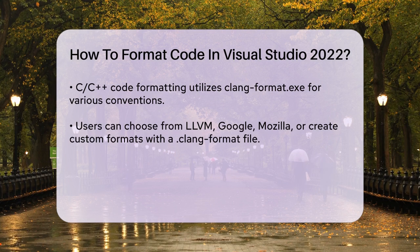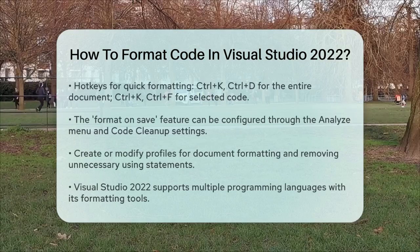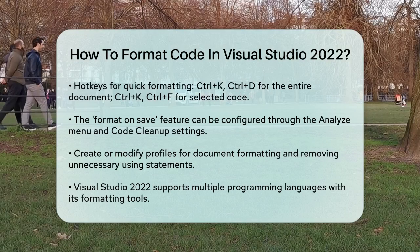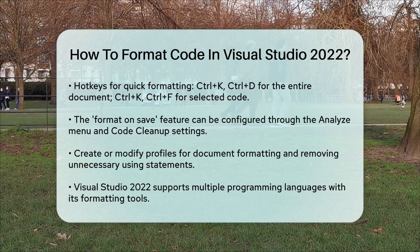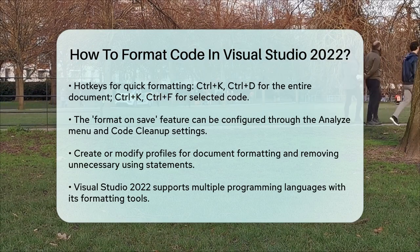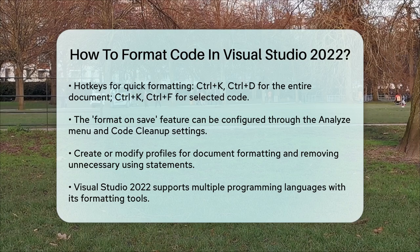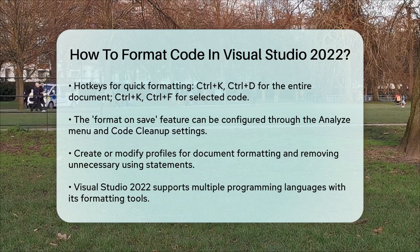Another handy feature is the Format on Save option. To set this up, go to the Analyze menu, select Code Cleanup, and configure your settings. You can create a new profile or fine-tune an existing one to do things like formatting your document and removing unnecessary using statements. Then go to Tools > Options > Text Editor > Code Cleanup, select your profile, and check the box to run it on Save.